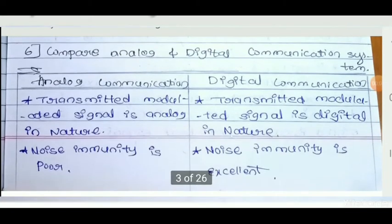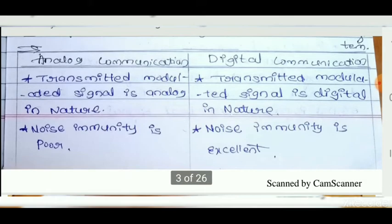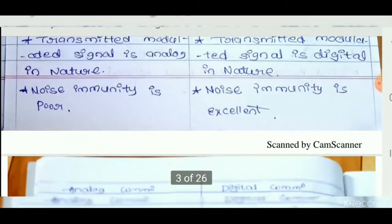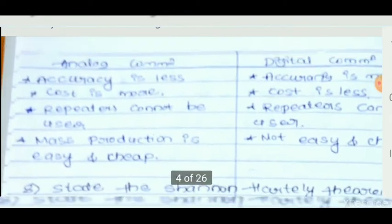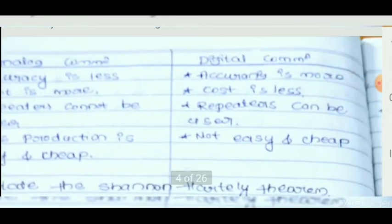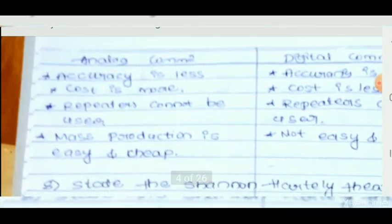Comparison of analog and digital communication systems: the transmitted modulated signal is analog in nature for analog communication. Noise immunity is poor for analog communication but excellent for digital communication. Accuracy is less in analog communication and more in digital communication. Cost is more in the case of analog communication.